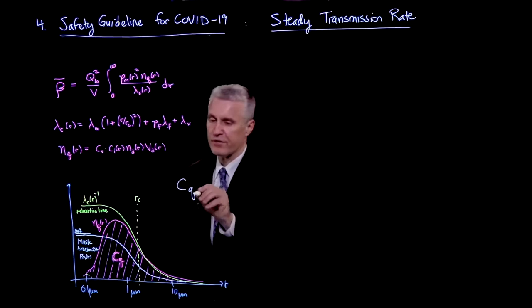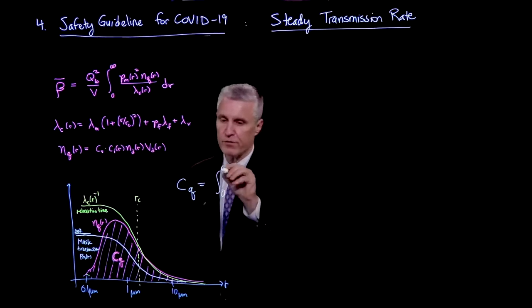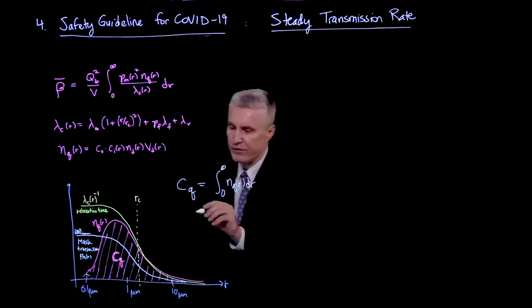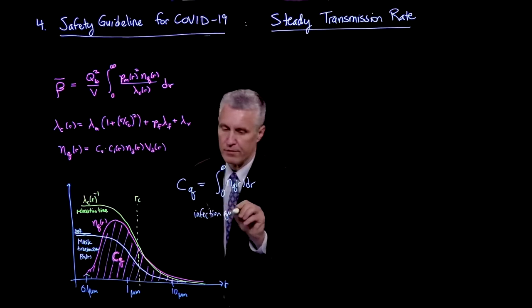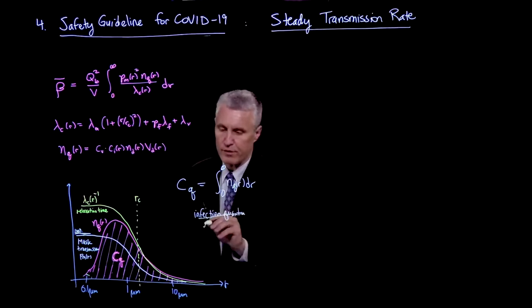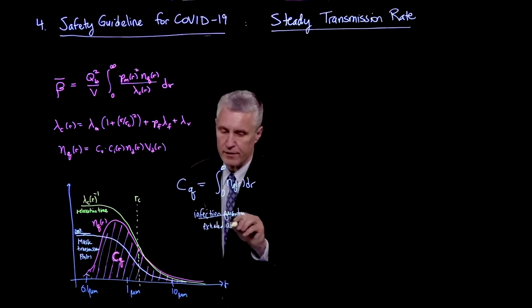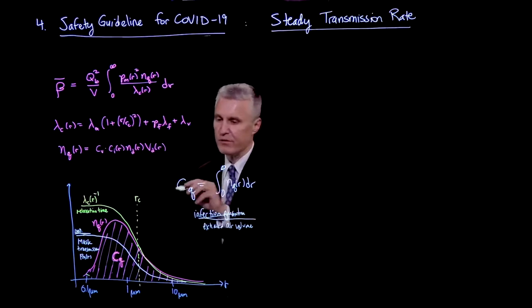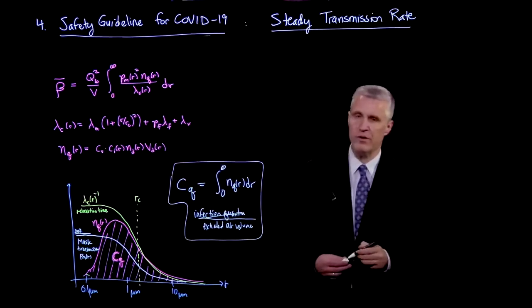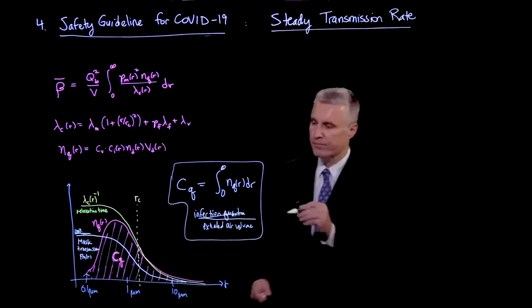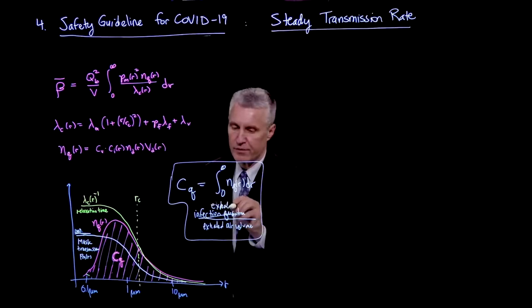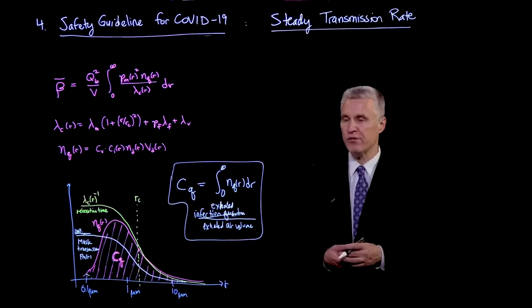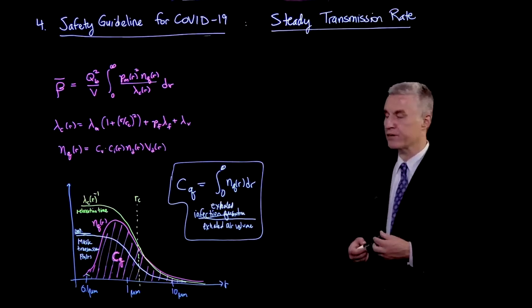First, we've already defined cq, which is the integral of nq(r) dr. This is the critical disease parameter, which is the infection quanta per exhaled air volume. So cq is a very important quantity for us, and we will return to that. That's the quantity we're going to want to fit to disease data for COVID-19 specifically. This would be the exhaled infection quanta per air volume, and we'll typically want to measure that at peak infectivity of an individual in order to design a conservative criterion.